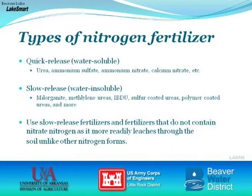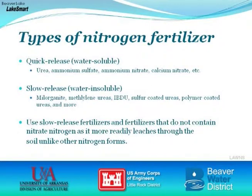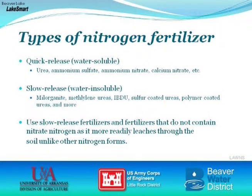When you go to buy fertilizer, there are two main categories of nitrogen fertilizers. Quick-release nitrogen fertilizers include urea, ammonium sulfate, ammonium nitrate, and calcium nitrate — all of these are water-soluble. As soon as you irrigate or receive rainfall after fertilizing, that fertilizer is solubilized and the plant can take it up right away. There are also slow-release fertilizers, often called water-insoluble fertilizers, which include some organic and synthetic nitrogen sources that release more slowly over time, usually based on microbial breakdown.